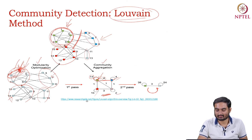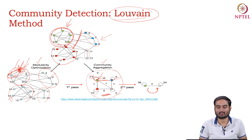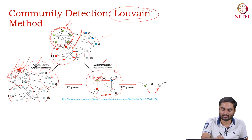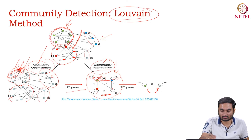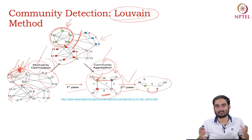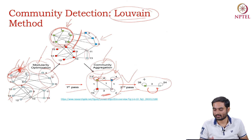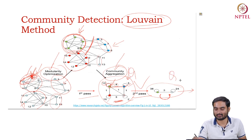Between communities, edges are drawn with weights equal to the number of inter-community edges between them — for example, between the green and sky communities. We draw edges for all super nodes, forming the super network. In this super network, we repeat the same process: modularity optimization and community aggregation. In the first pass we have two steps, in the second pass also two steps. Each pass produces a modularity value: Q1, Q2, Q3.